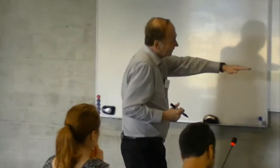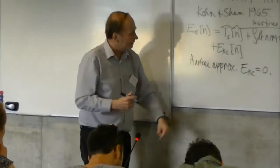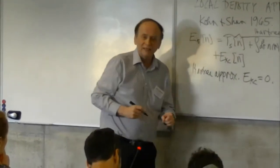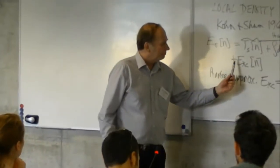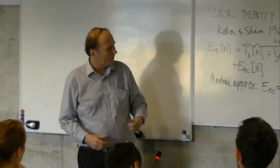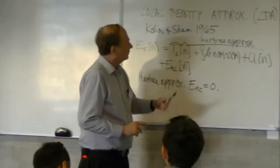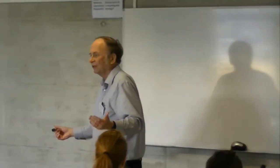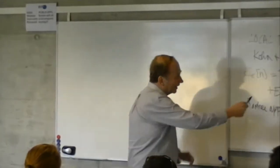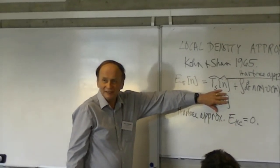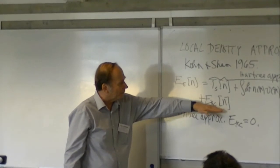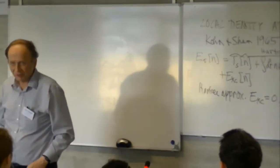If you get the right answer for bonding, you need a good approximation for EXC. The approximation has to be good in two senses: it has to be reasonably accurate to get realistic predictions, and it also has to be computationally feasible. In 1965, no physicists could do solids with Hartree-Fock — there were no codes. So the Hartree approximation was computationally easy. The nice thing about the LDA is that it wasn't computationally more complicated than the Hartree approximation, but it was much more accurate.